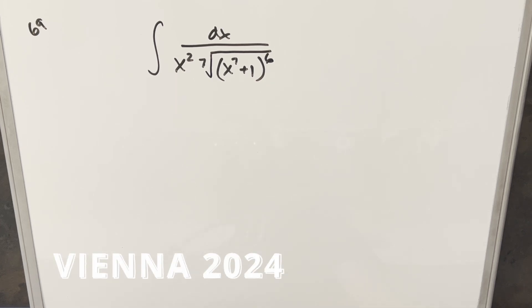Okay, we've retained another integral. This one's from the Vienna Integration B, problem number 69. We have the integral of 1 over x squared of the 7th root of x to the 7th plus 1 to the 6th power dx.